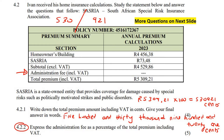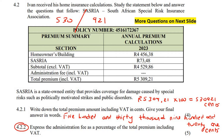Express the admin fee as a percentage of the total premium, including VAT. You've got a homeowner's building price and a SASRIA price — add those two numbers together and that gives you the subtotal. Then there is the admin fee, and then you get your total. But there's a little catch here: this number is excluding VAT, but all of the others are including VAT. So we need to quickly add VAT to this number.